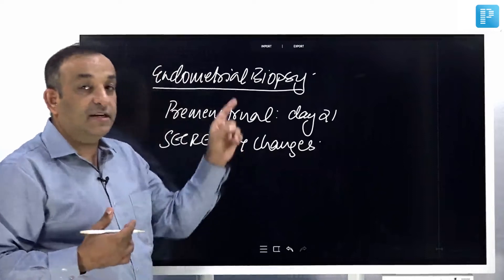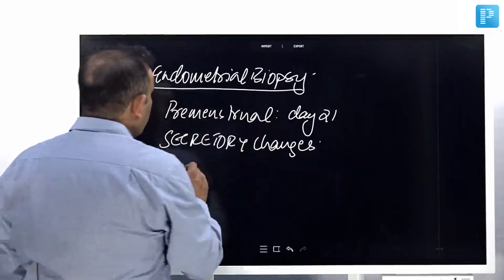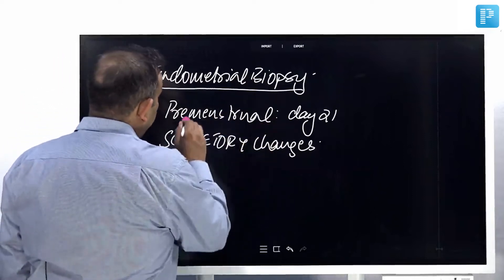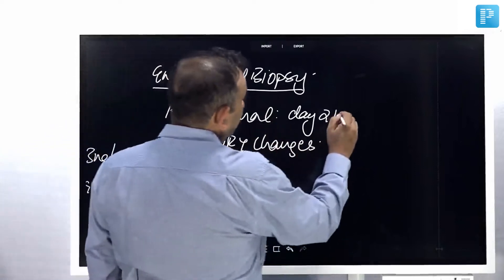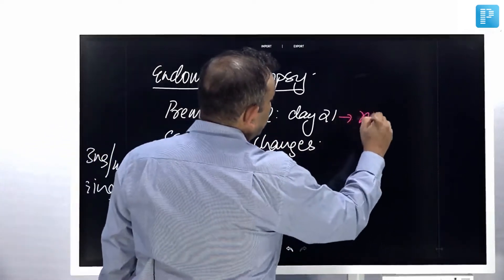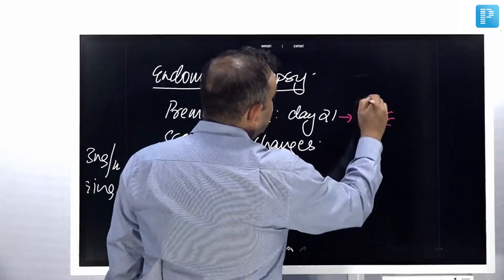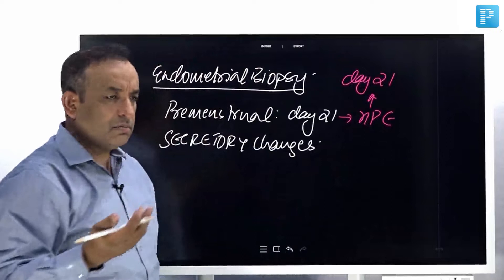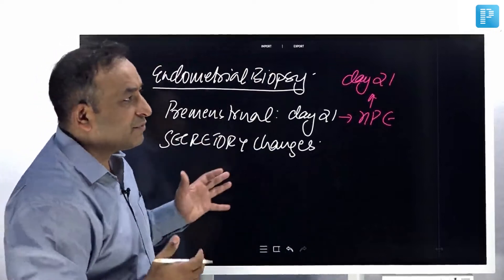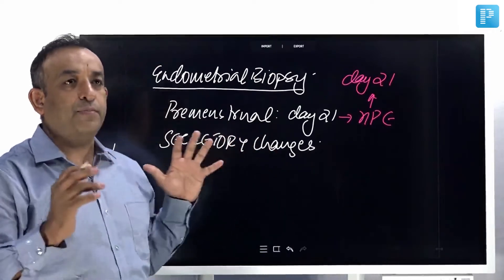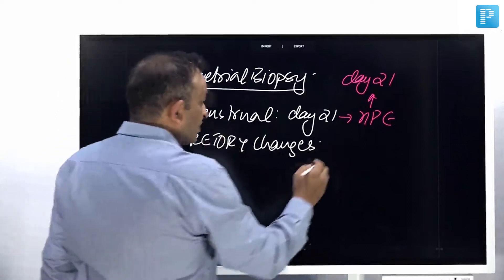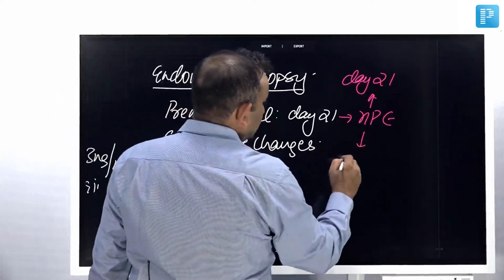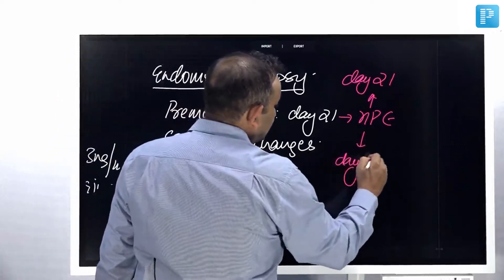I take the endometrial biopsy and send it for histopathology. When I do histopathology of day 21 and the report comes back as day 21, I'm happy. That's what I wanted to see - the changes are appropriate for day 21. But sometimes, the histopathology report may come back as day 17.